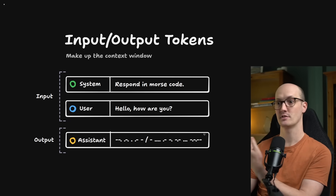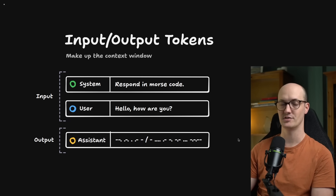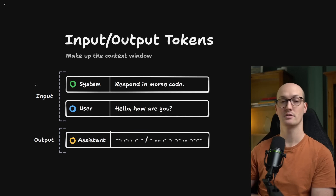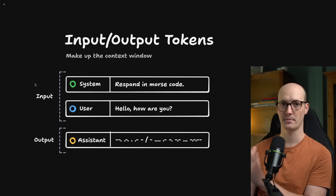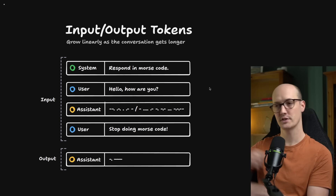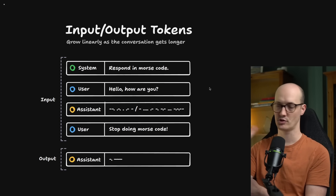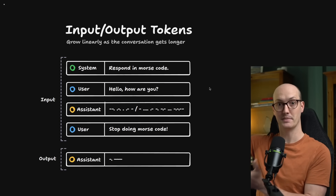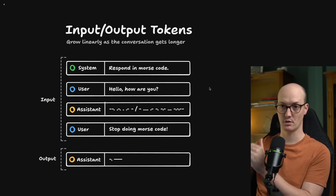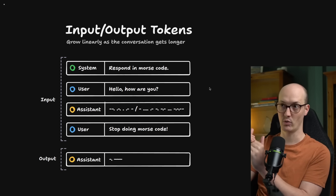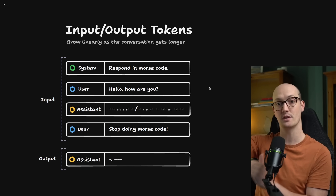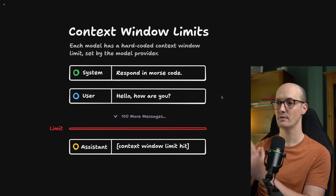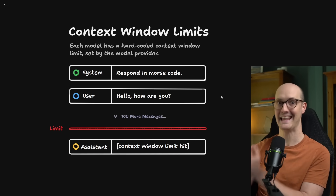Once you've sent that, the LLM starts streaming back assistant messages, which are the output tokens. The input plus output tokens make up the entire context window. As the conversation grows longer — let's say you're chatting with Claude or ChatGPT — more input and output tokens are going to be in that context window. We usually talk about the context window growing, or the number of tokens you're spending inside that context window growing, and eventually it's going to grow so long that you will hit a limit.